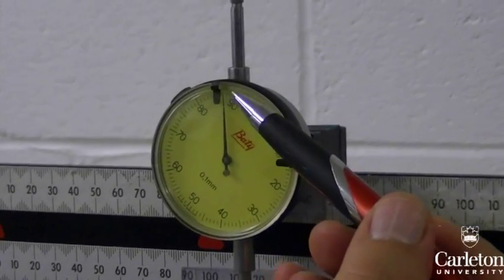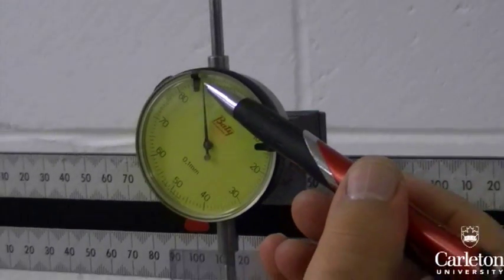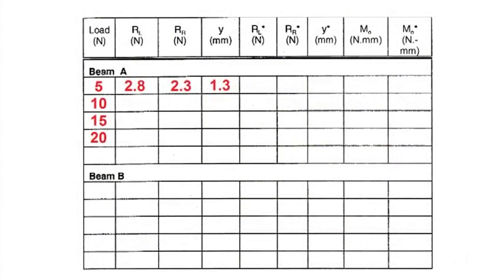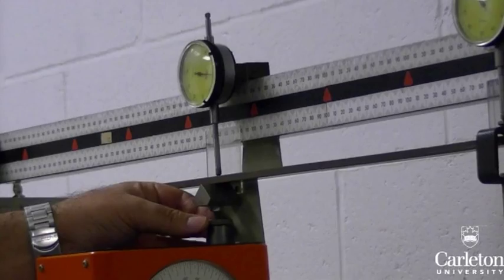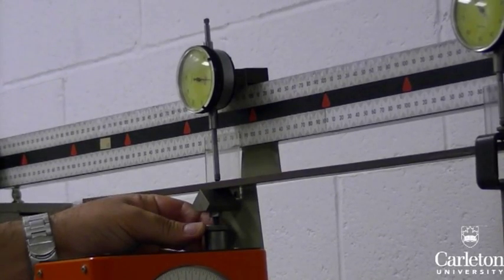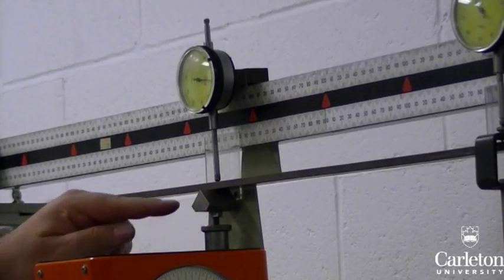Since this deflection is downward, the displacement gauge is recording it as negative 1.2 millimeters. Repeat this for each load case. Remember to zero the deflection at both ends, but not at the hanger, before recording anything.